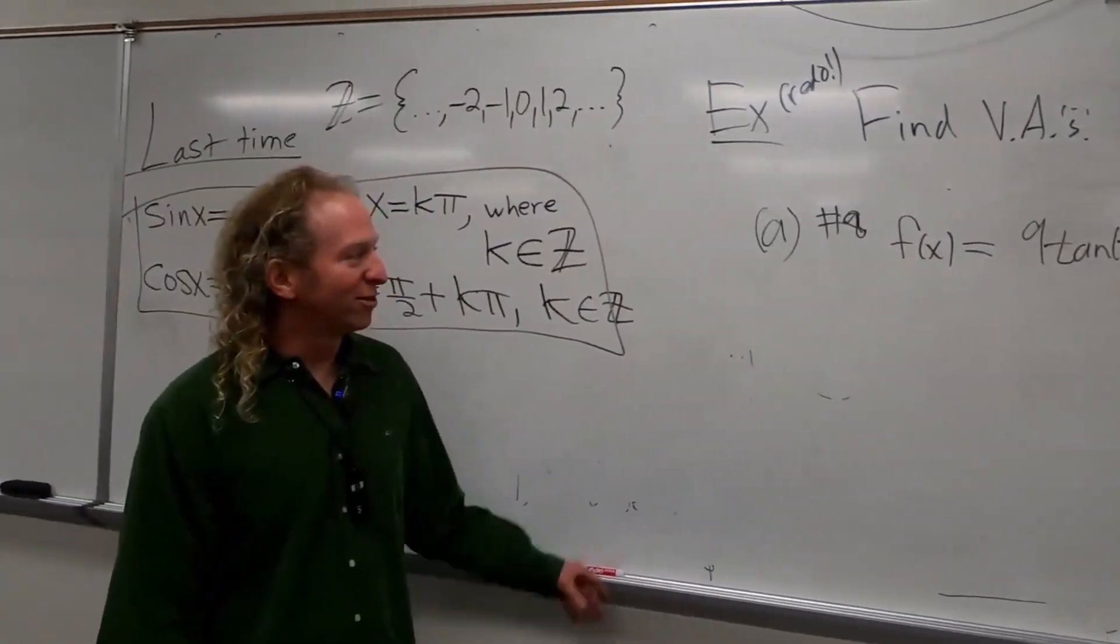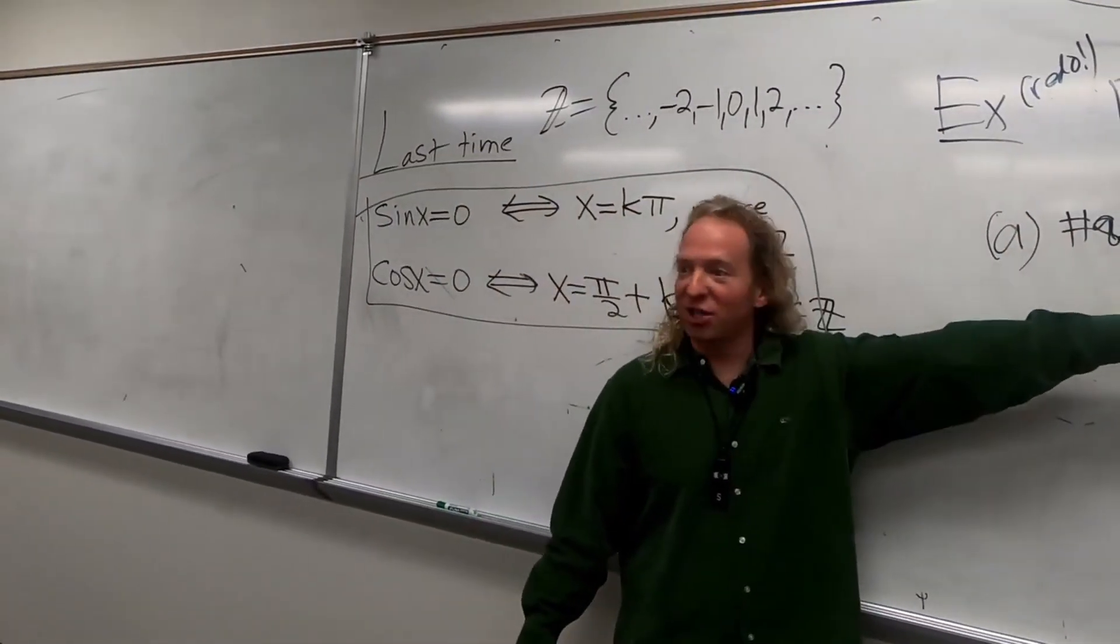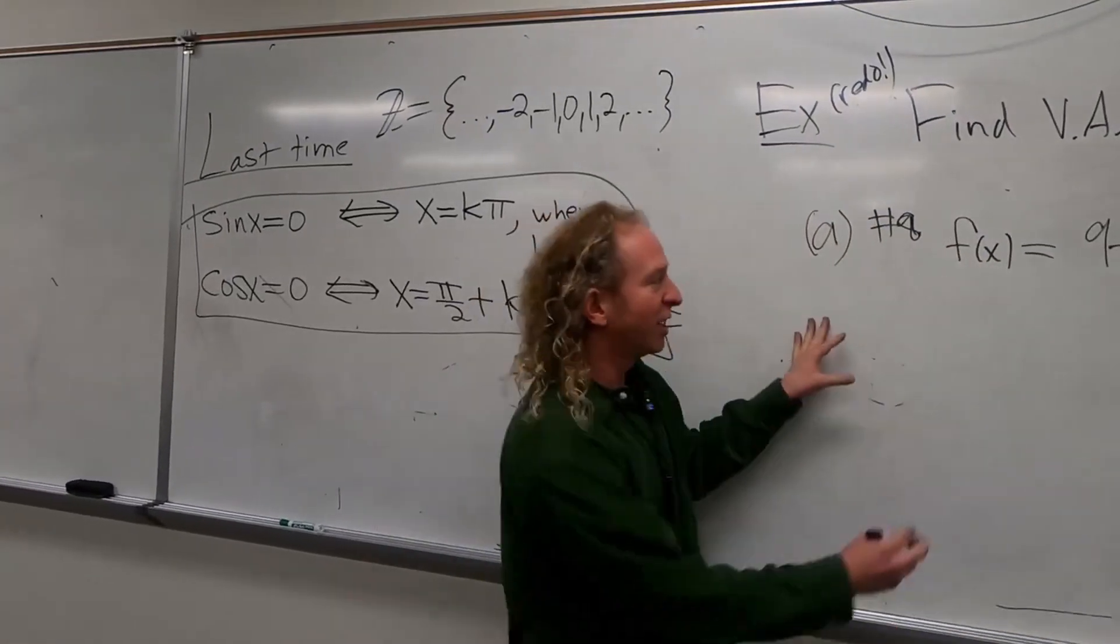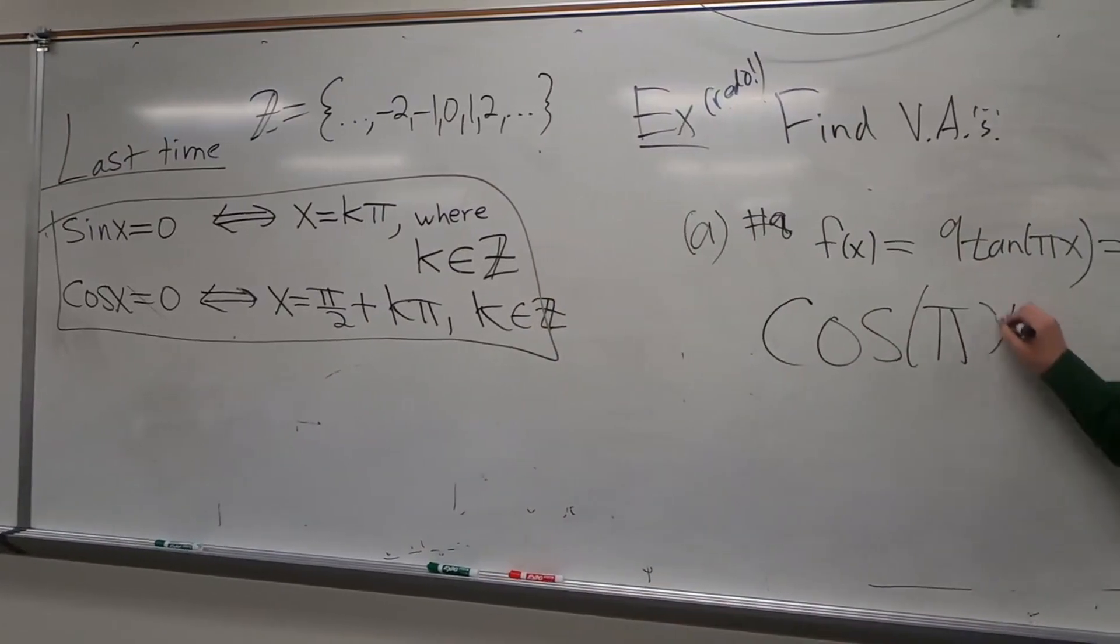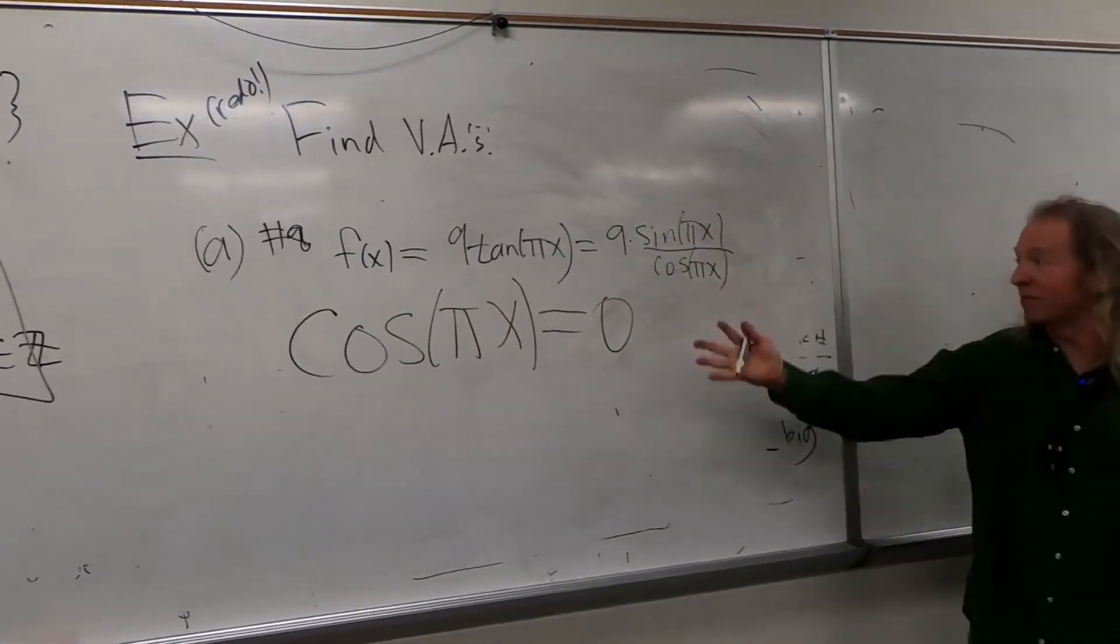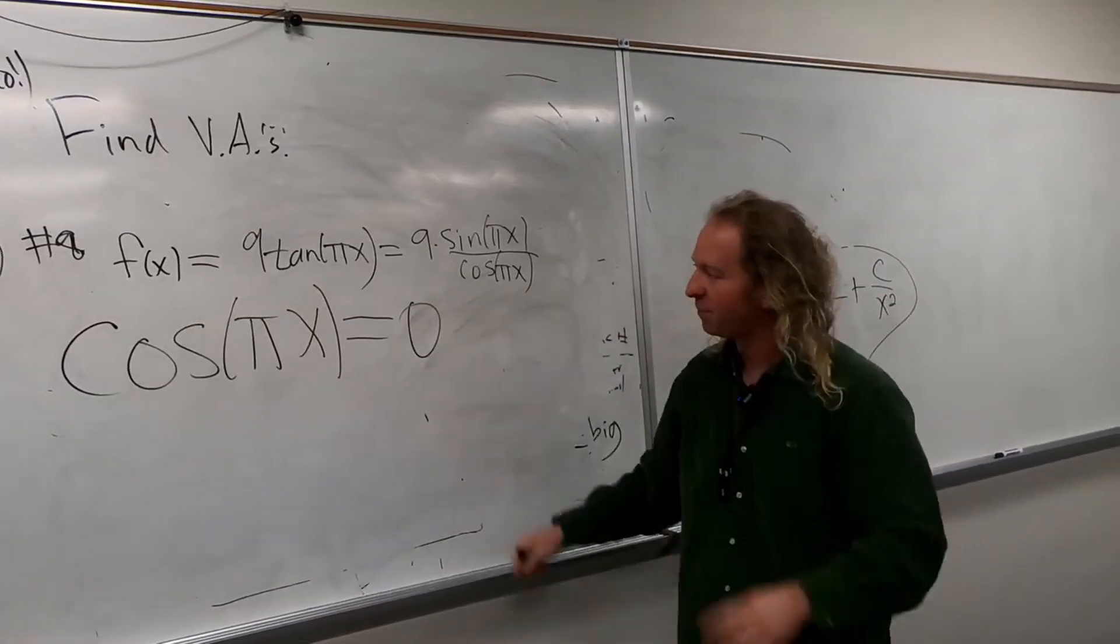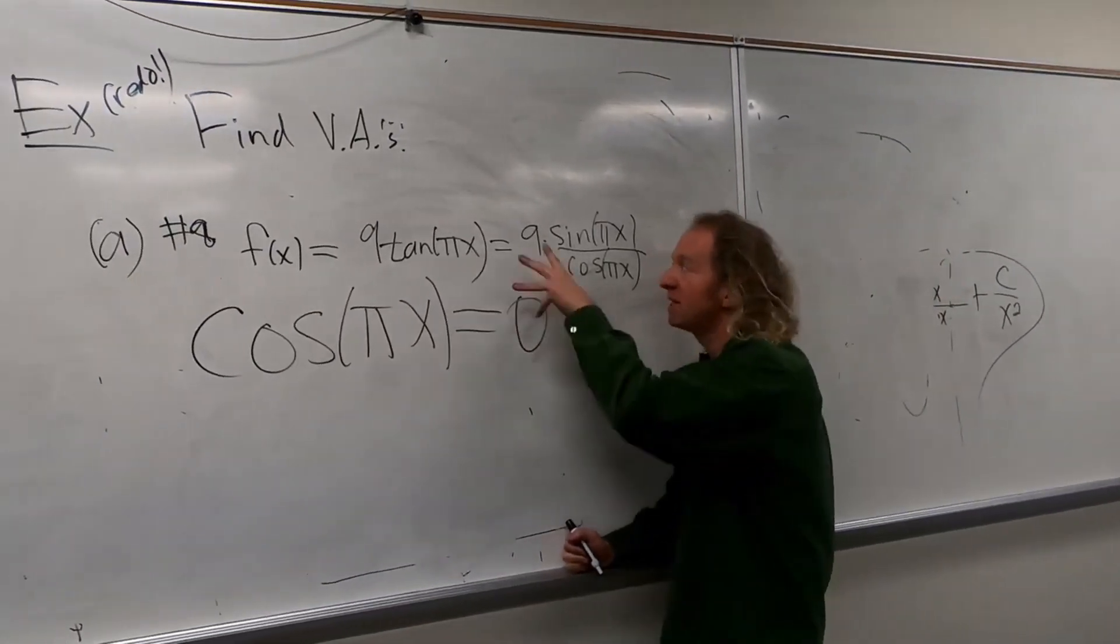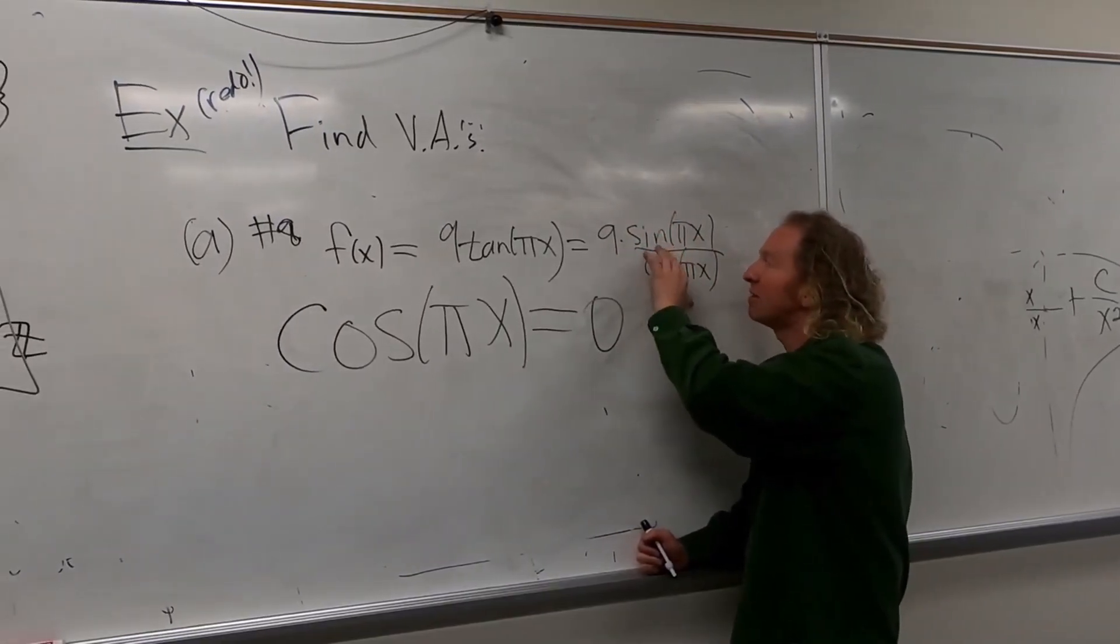Okay, this is a fraction, so we want to know where the bottom is 0, right? That's where it has a VA. So you take the bottom and set it equal to 0. So cosine of pi x is equal to 0. What happened here? What happened to the 9? What happened to the sine?